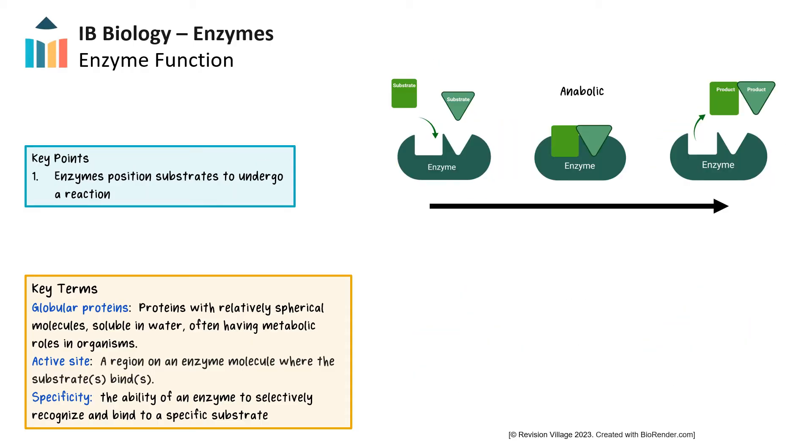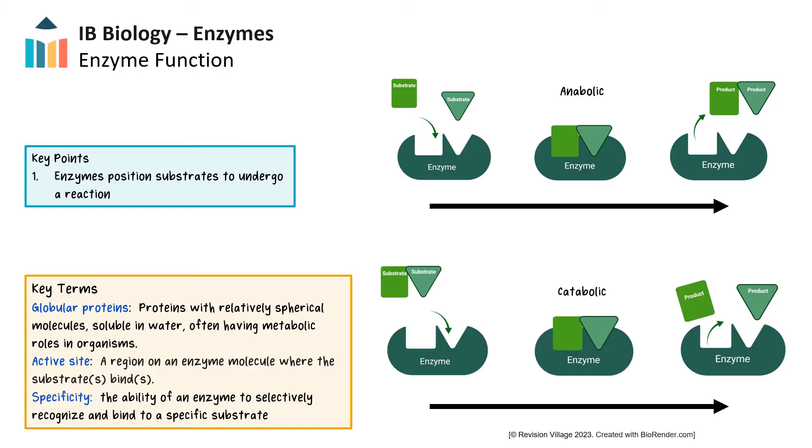Now that we've looked at the structure of enzymes, let's further examine how their structures allow them to perform their function of catalyzing reactions. When a substrate binds to the active site of the enzyme, the enzyme will position the substrate so it undergoes a chemical reaction. In anabolic reactions, the enzyme works by holding two reactants together at the correct orientation to facilitate the formation of a chemical bond between the molecules. In catabolic reactions, the enzyme will also work by positioning the molecule to encourage chemical bonds to break.